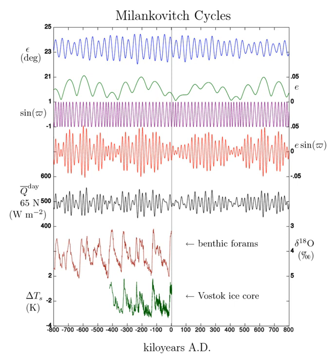Saturn's moon Titan has a cycle of approximately 60,000 years that could change the location of the methane lakes. Neptune's moon Triton has a variation similar to Titan's, which could cause its solid nitrogen deposits to migrate over long time scales.